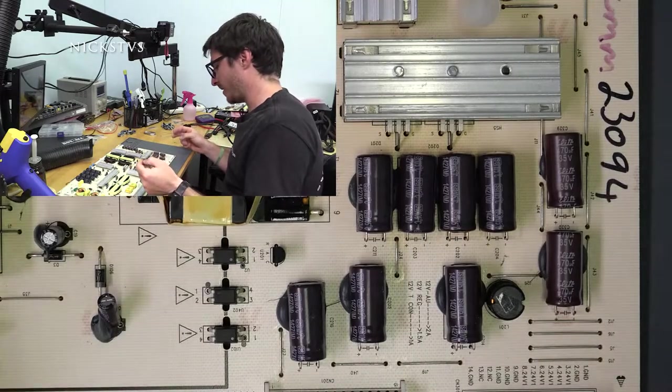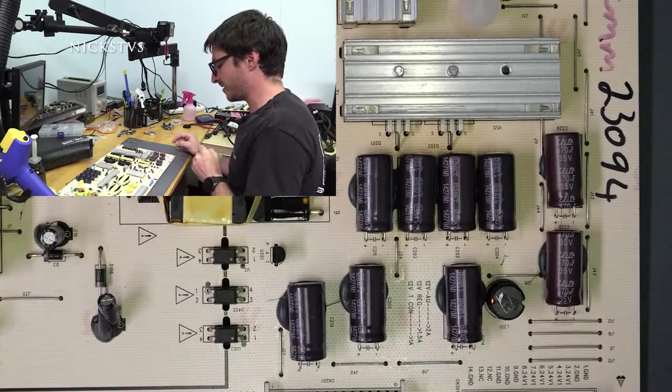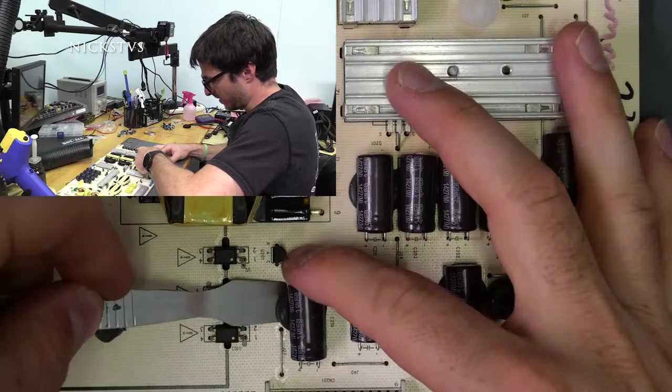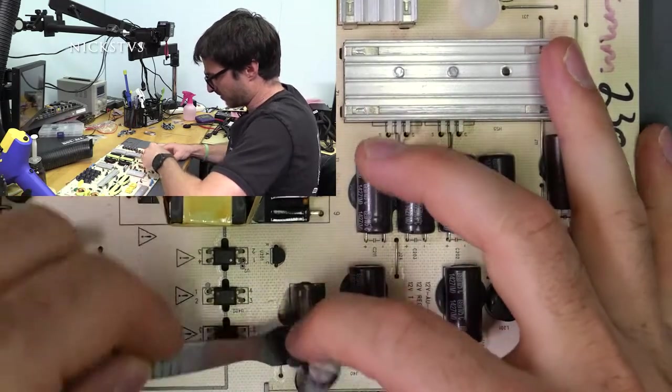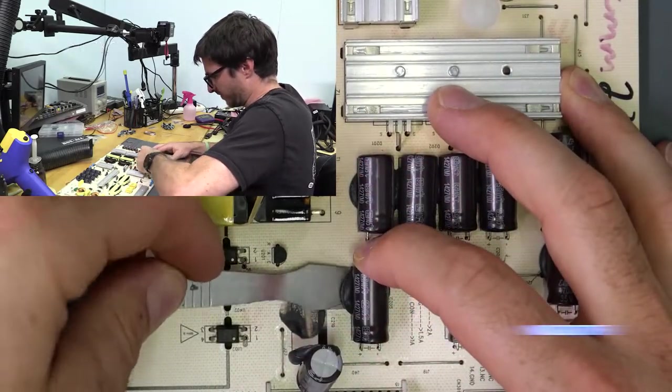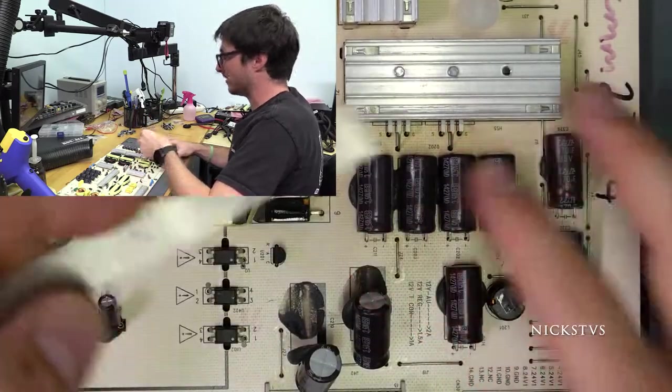So I'm going to get started on the 1000 microfarads, 16 volts capacitors. And we have some silicone. I'm going to just use this little spatula tool to remove them.